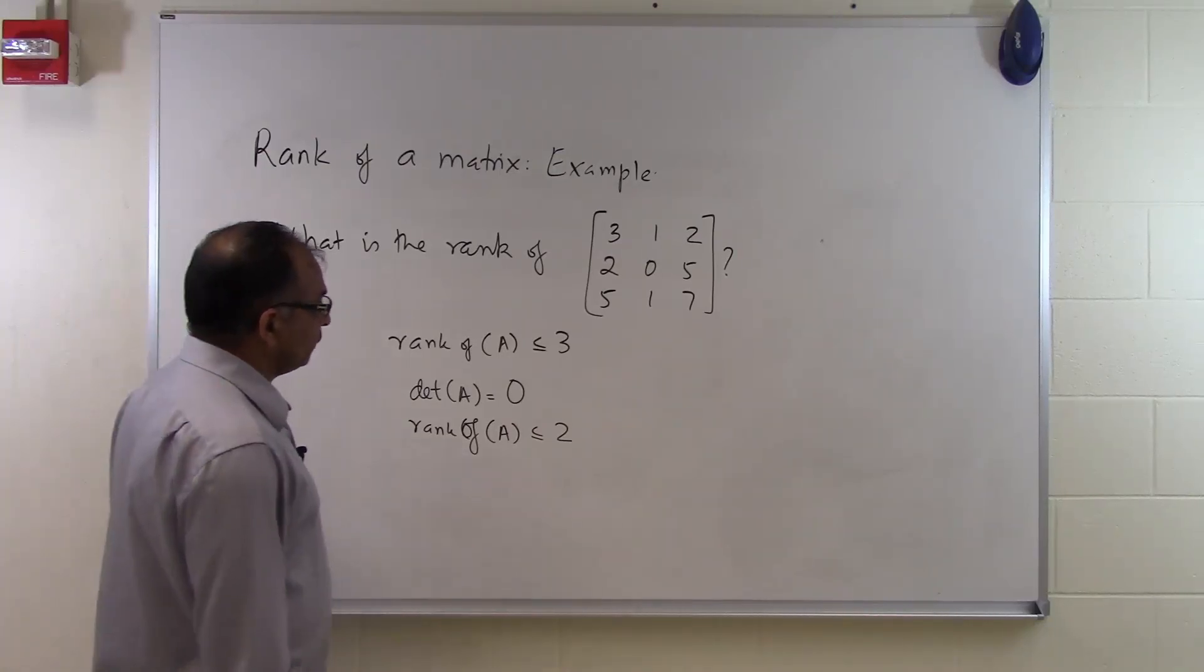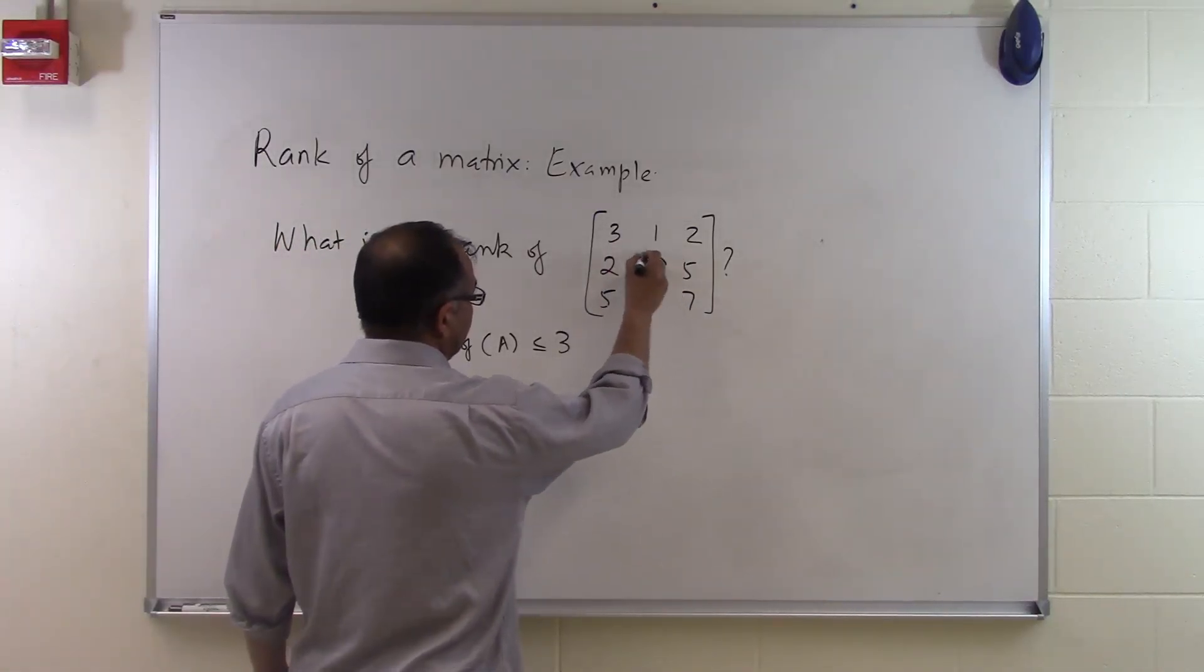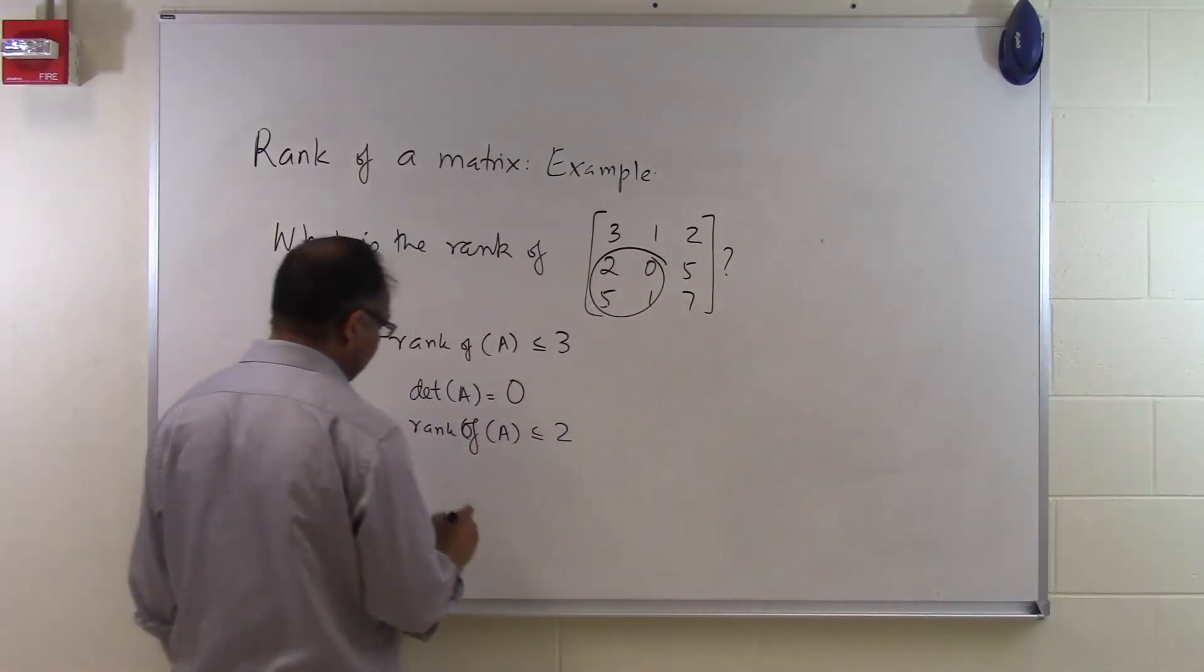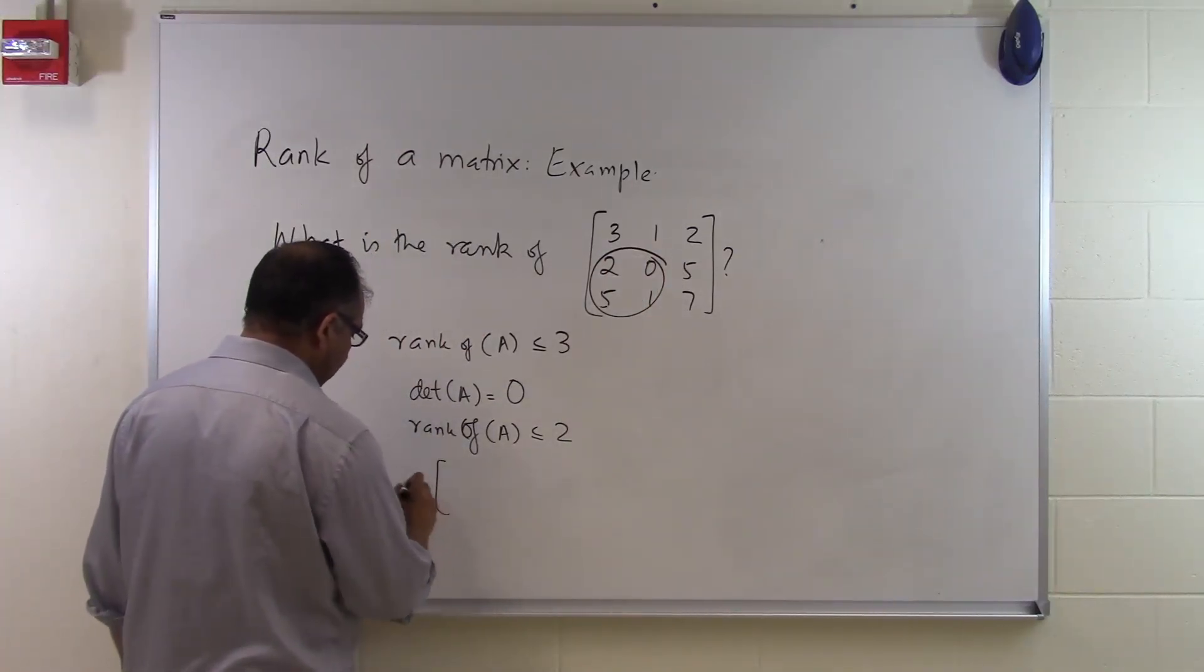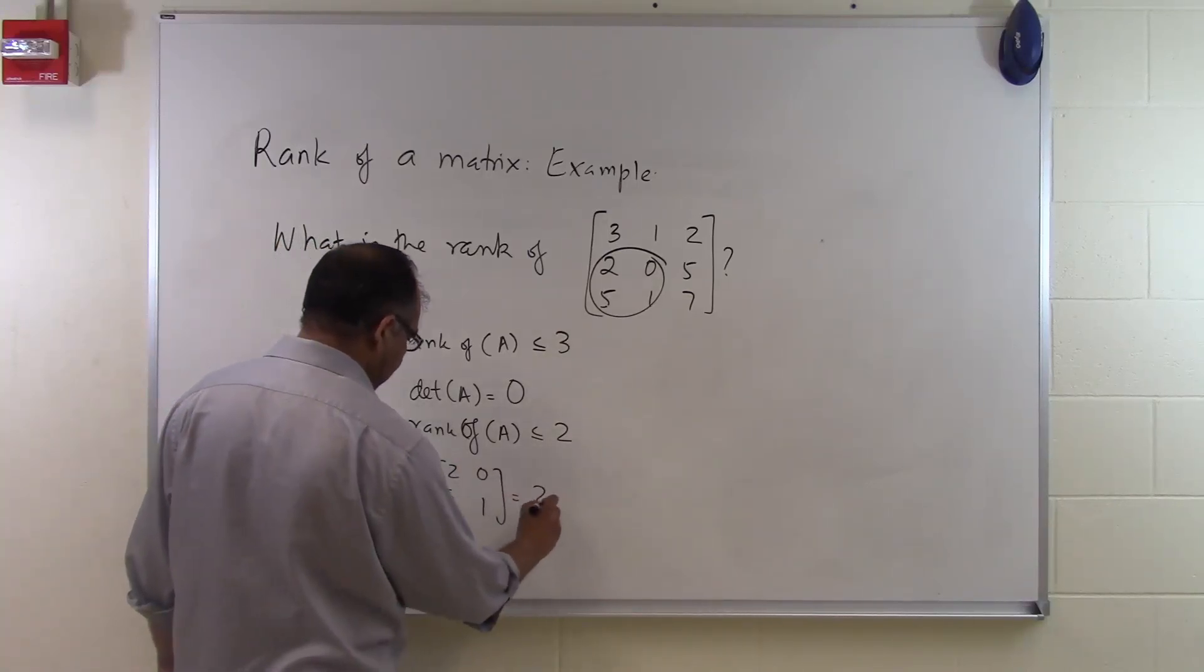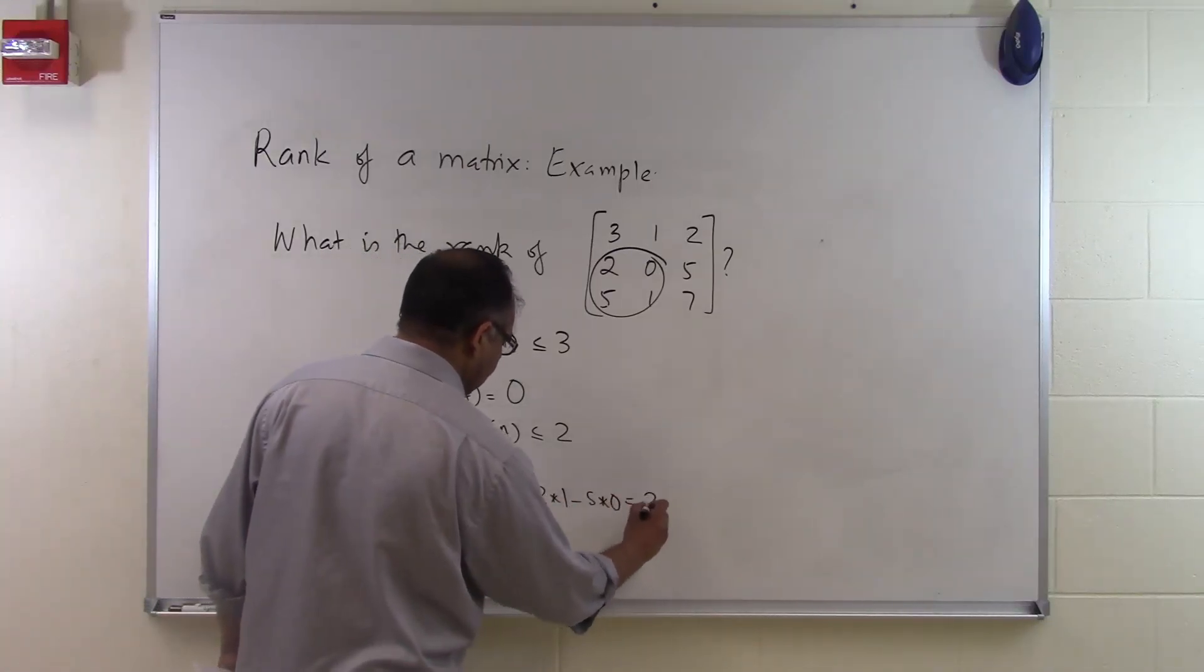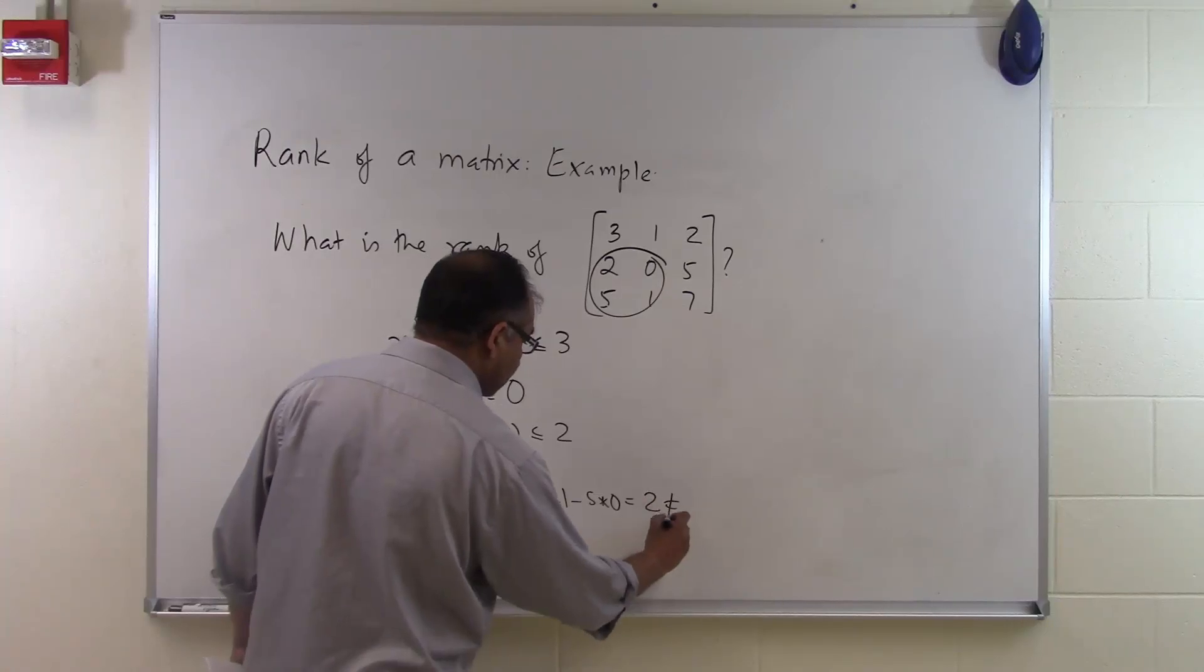So let's suppose if I take the submatrix out of this. Let's suppose I take this here, a 2x2 matrix. So in this case the determinant of 2, 0; 5, 1 is 2 times 1 minus 5 times 0, which is 2. So that is non-zero.